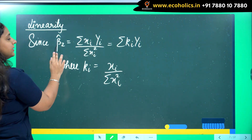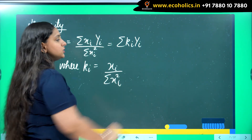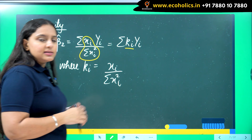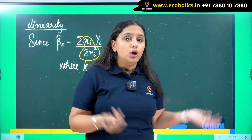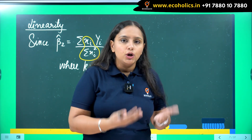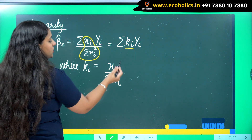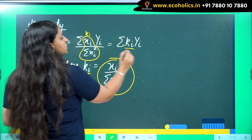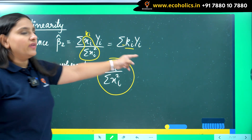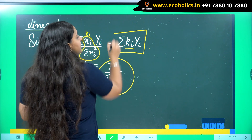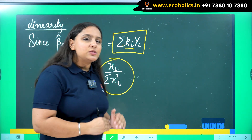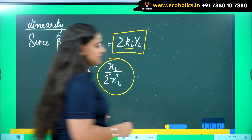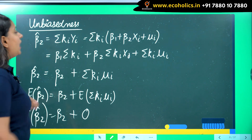Continuing: β̂₂ equals summation xi·Yi divided by summation xi squared. I can define ki as xi divided by summation xi squared. Since the xi values are non-stochastic, ki acts as a weight assigned to each Yi. Replacing, I get β̂₂ = summation ki·Yi. It is now clearly observable that β̂₂ is a linear function of Yi. This is how we show the linearity of the OLS estimator.